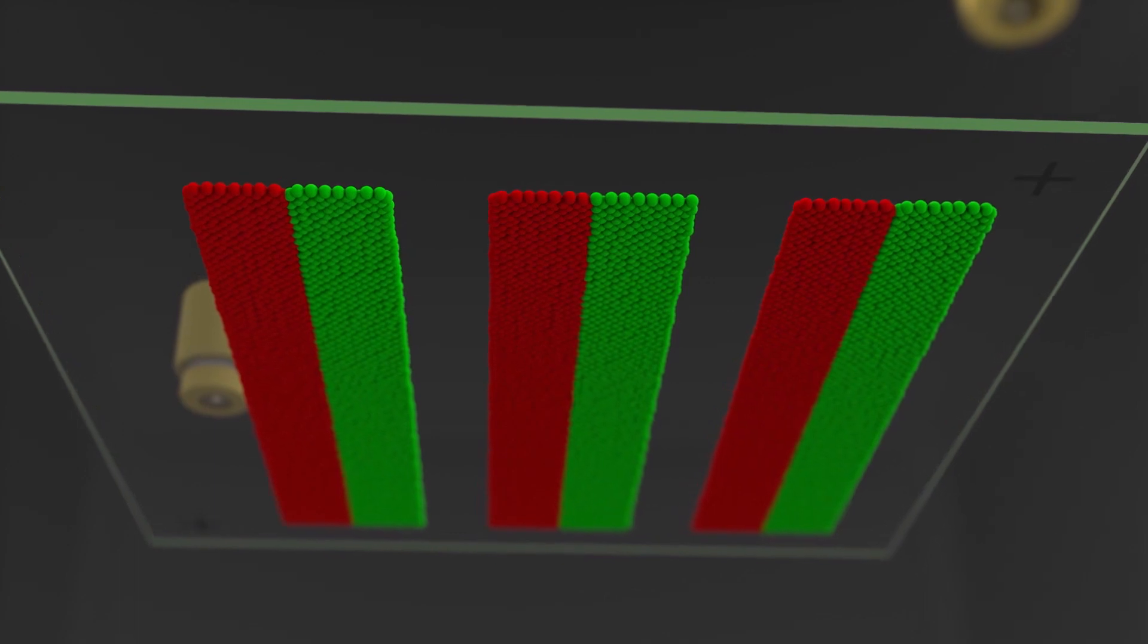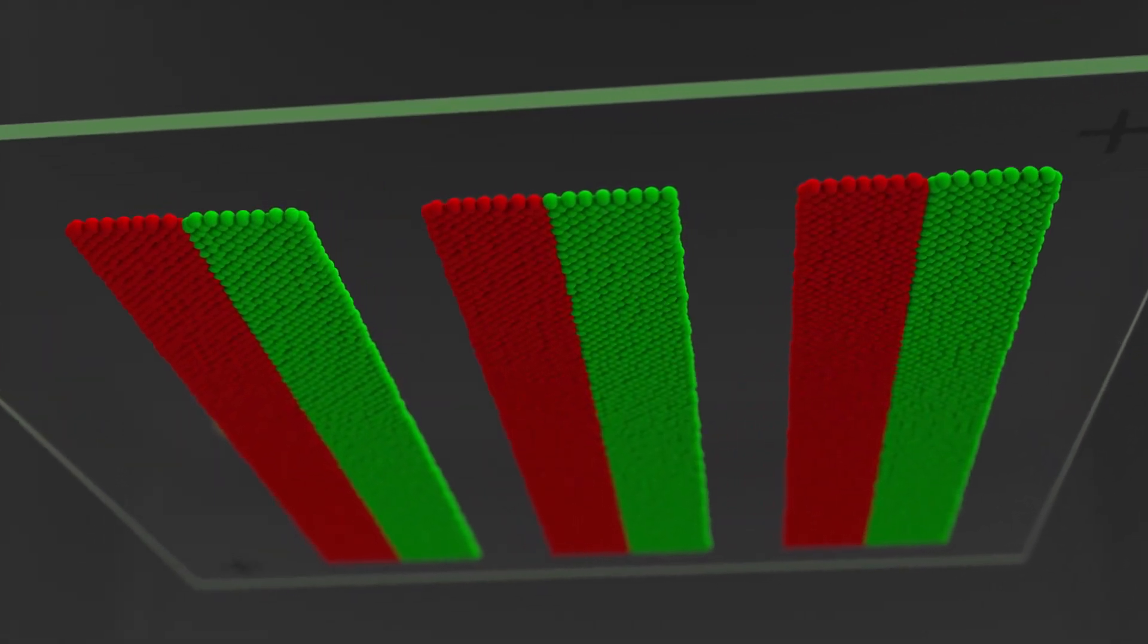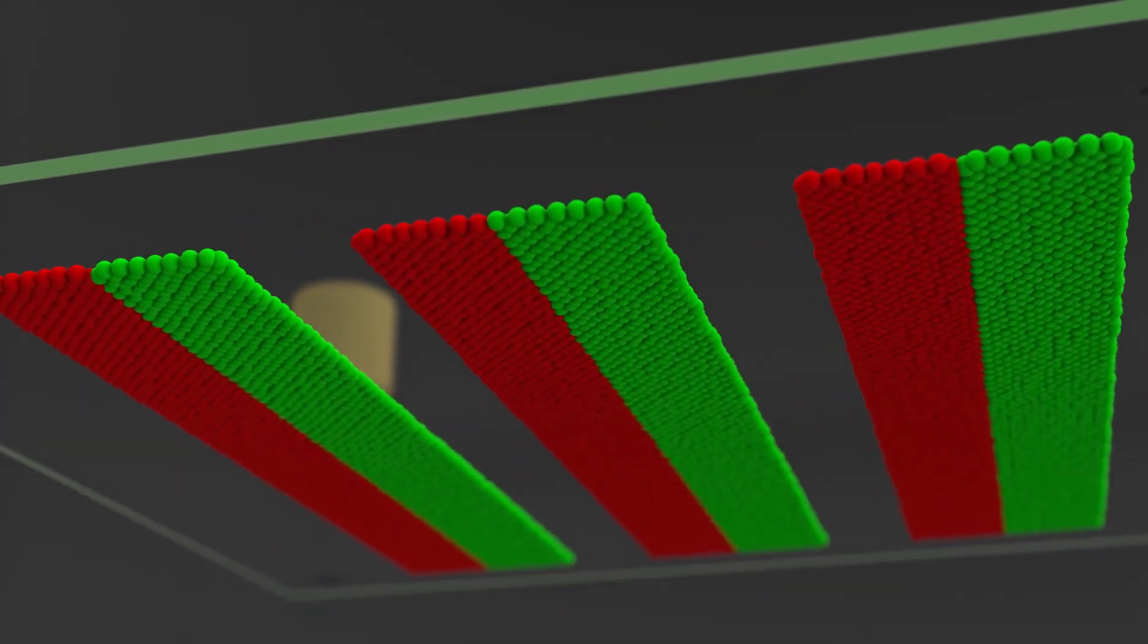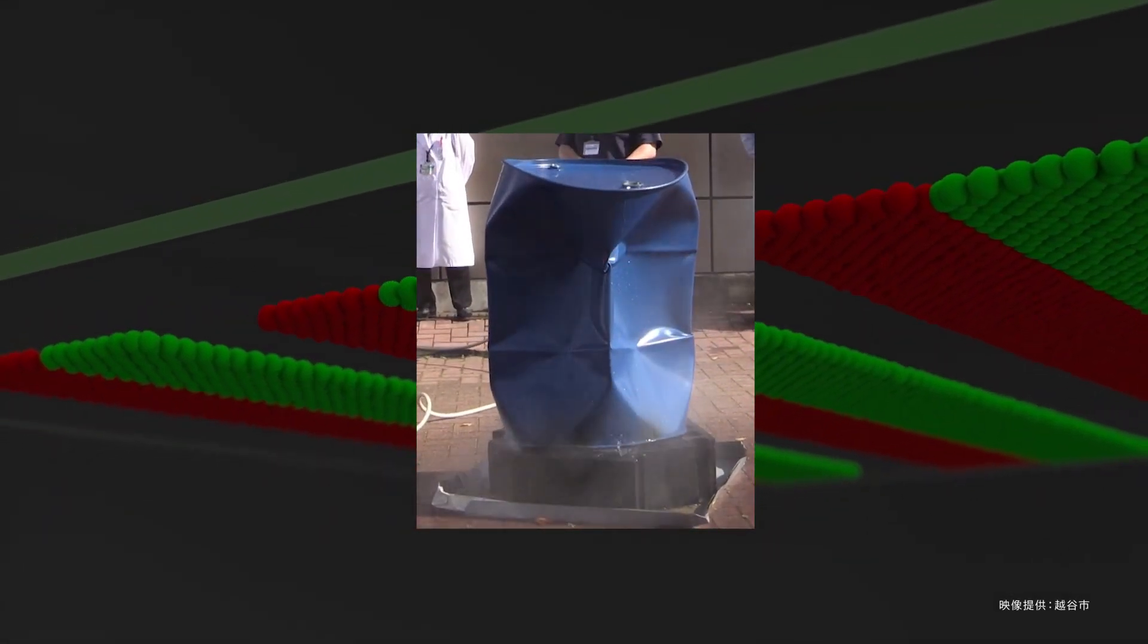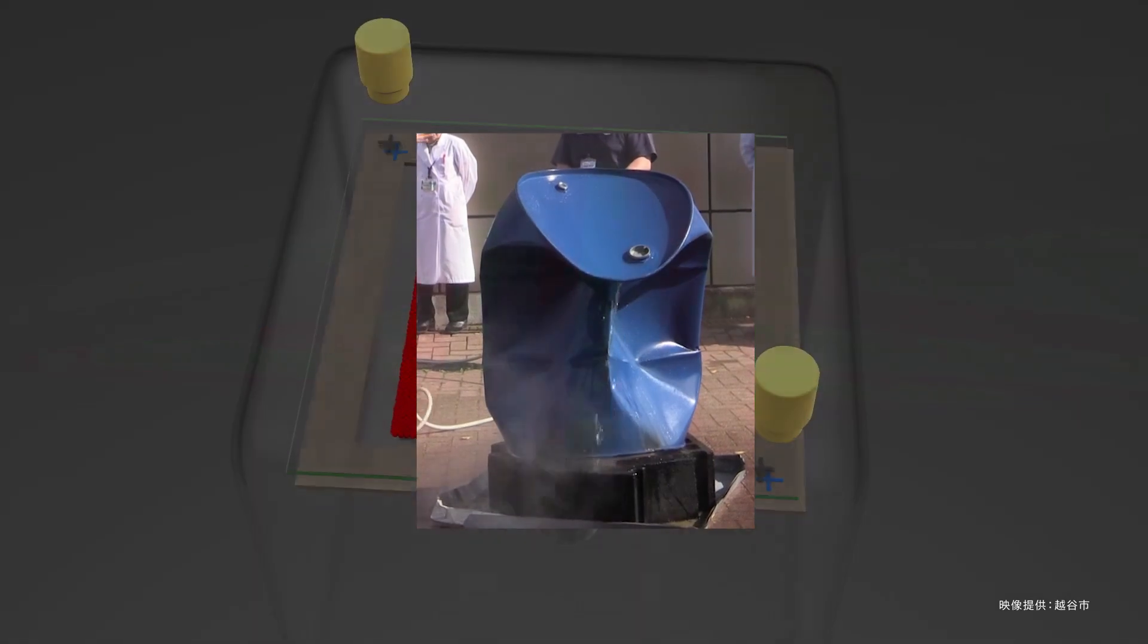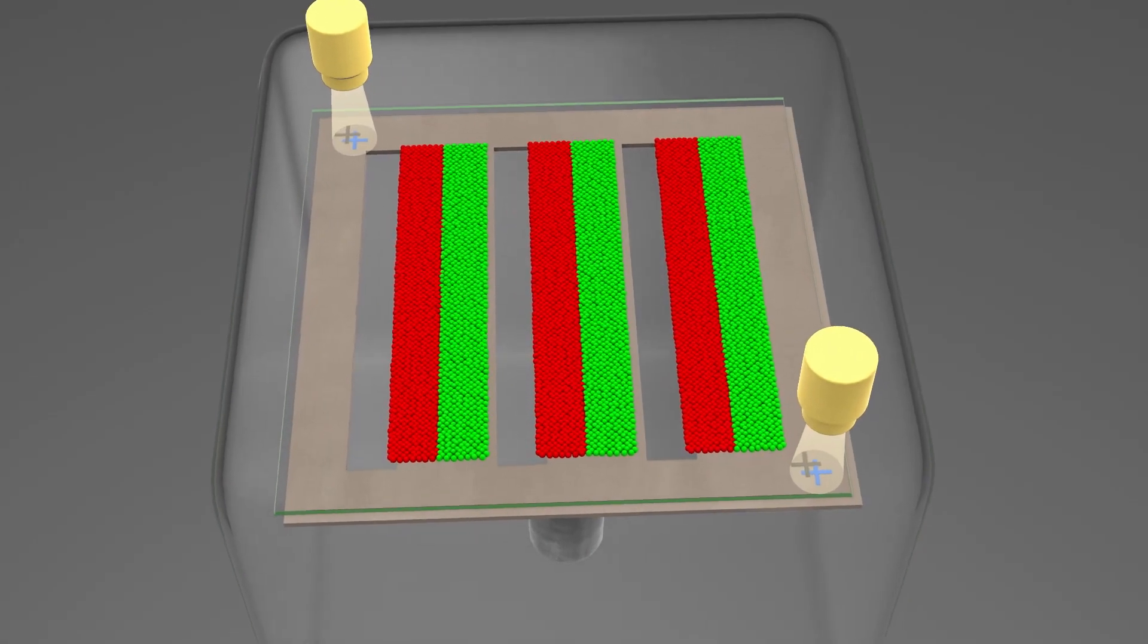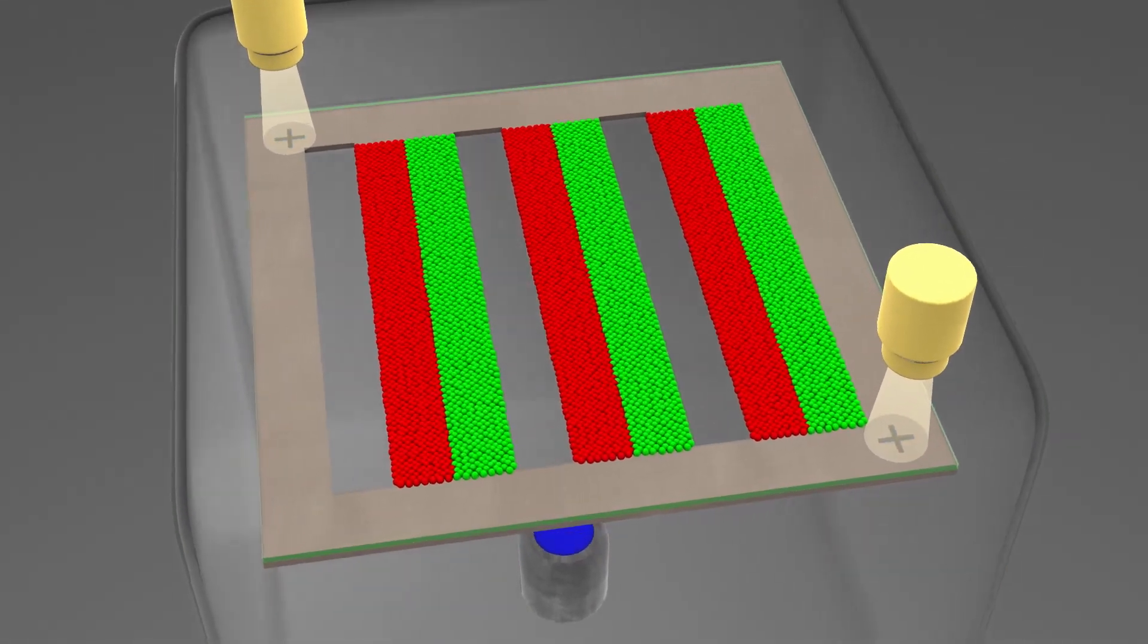The technology for performing this alignment in a vacuum is also important. For example, just like a steel drum is subjected to atmospheric pressure and collapses when a vacuum is created inside it, deformation and distortion occur in containers that maintain a vacuum.